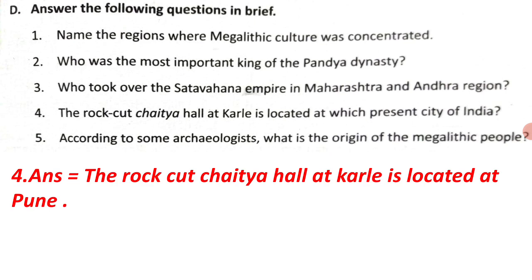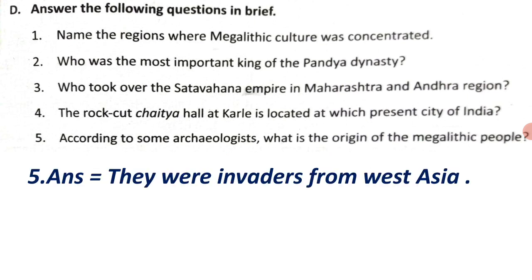Question 4: The Rock-cut Chaitya hall at Karle is located at which present city of India? Answer: The Rock-cut Chaitya hall at Karle is located at Pune. Question 5: According to some archaeologists, what is the origin of the megalithic people? Answer: They were invaders from West Asia.